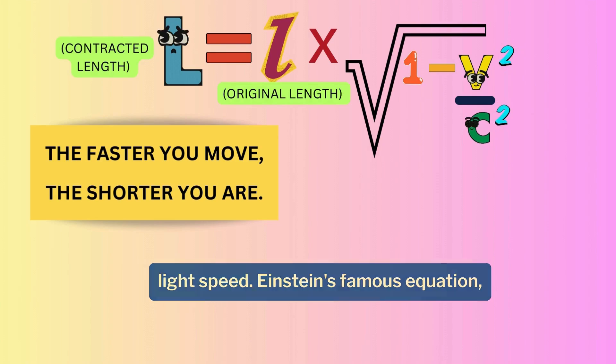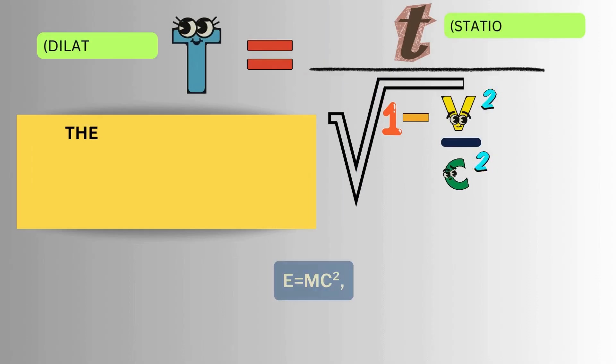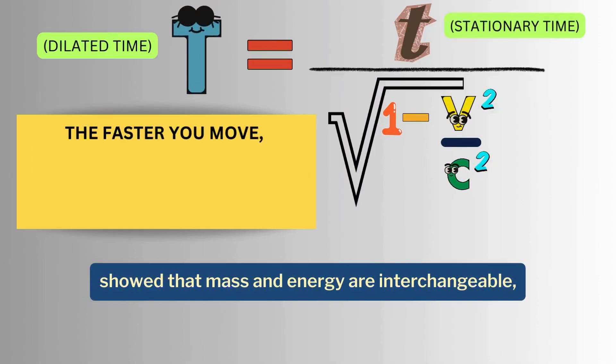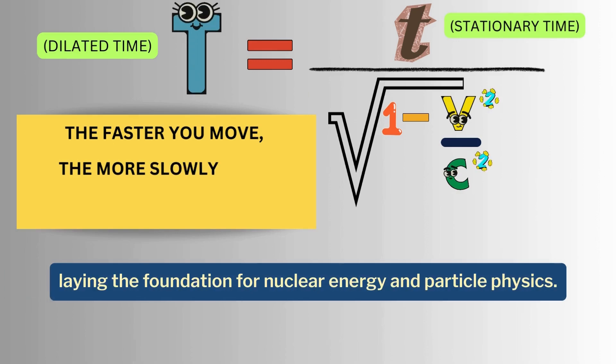Einstein's famous equation, E equals mc square, showed that mass and energy are interchangeable, laying the foundation for nuclear energy and particle physics.